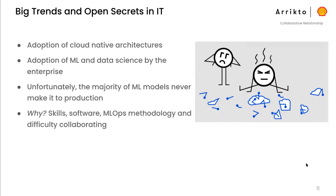There are two big trends in IT and one big open secret relevant here. Everyone can agree that adoption of cloud-native architectures is on a tear — developers building web apps and microservices are all thinking cloud-native and how to bring Kubernetes into the mix. Also, lots of companies are making big investments in machine learning and data science, especially in the enterprise, and oftentimes these companies are at the vanguard of this. But the unfortunate reality is that the majority of ML models never make it to production.